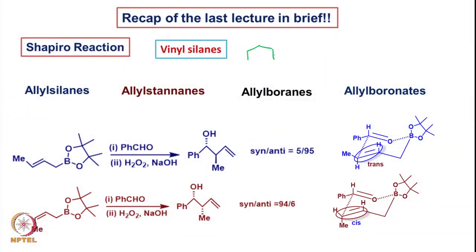Hello and welcome for today's class. Last time we were looking at the Shapiro reaction and some allylation of various kinds of aldehydes or carbonyl compounds using different allyl metal reagents. In the Shapiro reaction, we made use of the vinyl lithium and then converted it into vinyl silane. We then converted this into the epoxide and eventually into a carbonyl group, achieving what is called 1,2 ketone transposition.